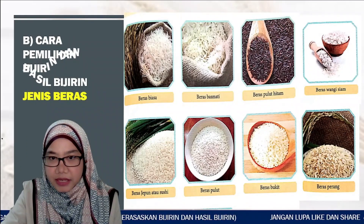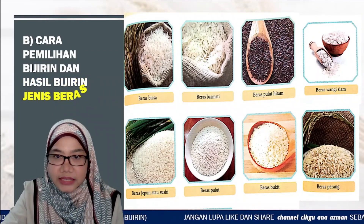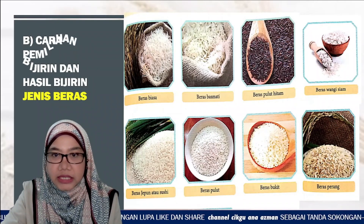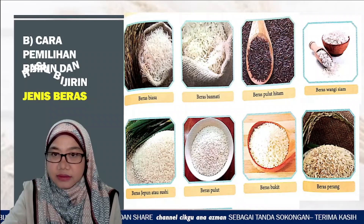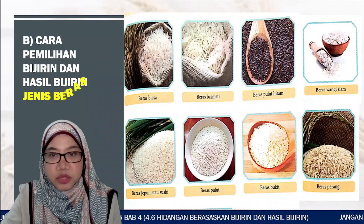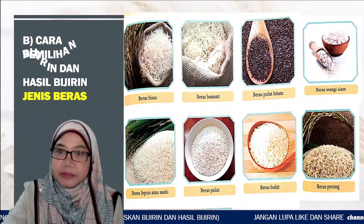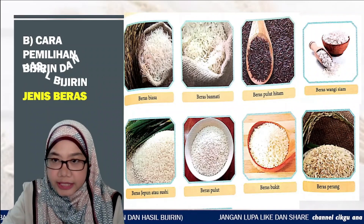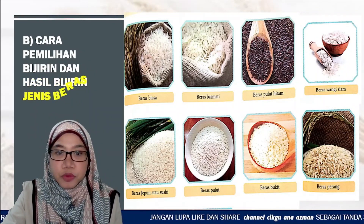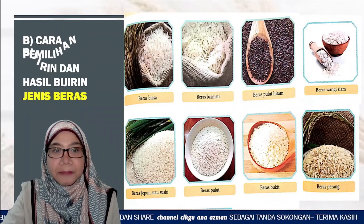Terdapat 8 jenis beras: beras biasa, beras mati (agak mahal, biji lebih panjang dan kurang berkanji berbanding beras biasa), beras pulut hitam, beras wangi siam, beras jepun atau sushi, beras pulut, beras bukit dan beras perang.